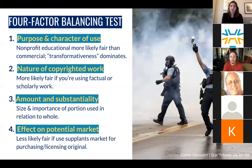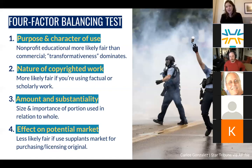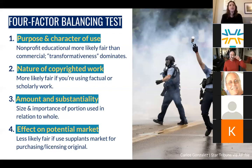Factor two addresses the nature of the copyrighted work. A use is more likely to be fair if you're using a factual or scholarly work rather than a more creative work. But courts often don't find this factor very consequential because they don't really want to be in the business of determining how artistic or creative a work is. In any case, factor two leans against us here because this is a creative work. But remember, fair use is a balancing test overall — any one factor weighing against us is not dispositive of overall fairness.